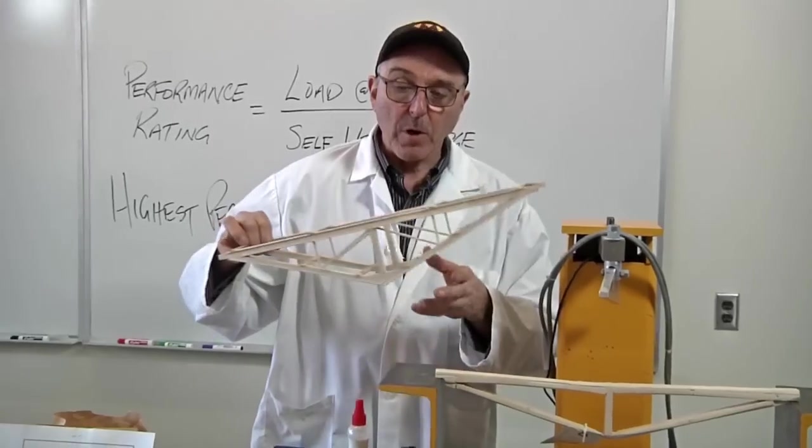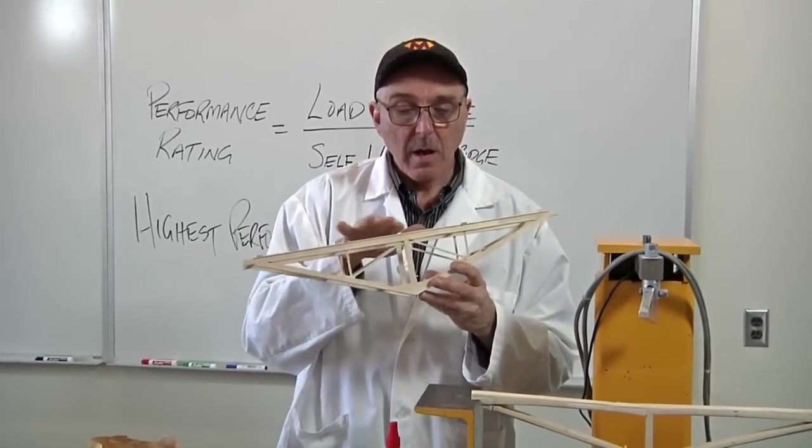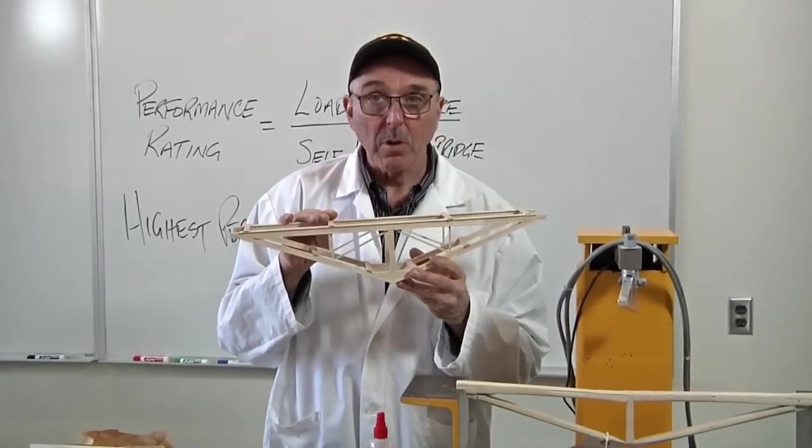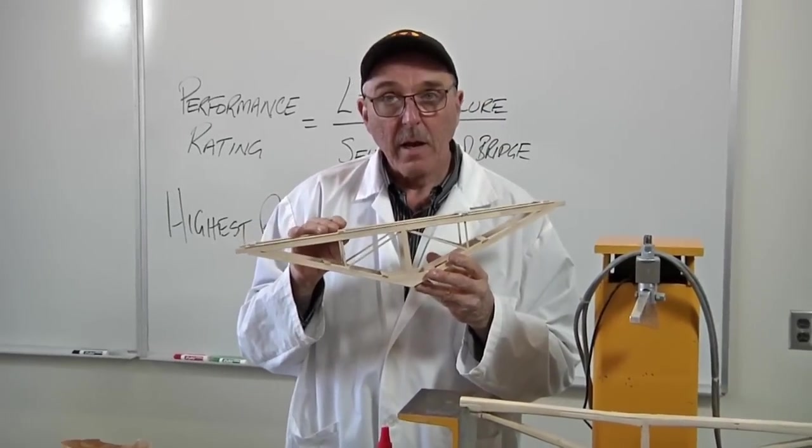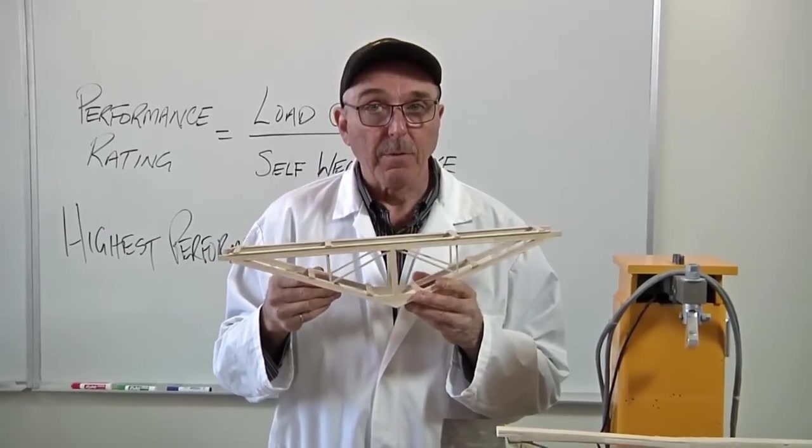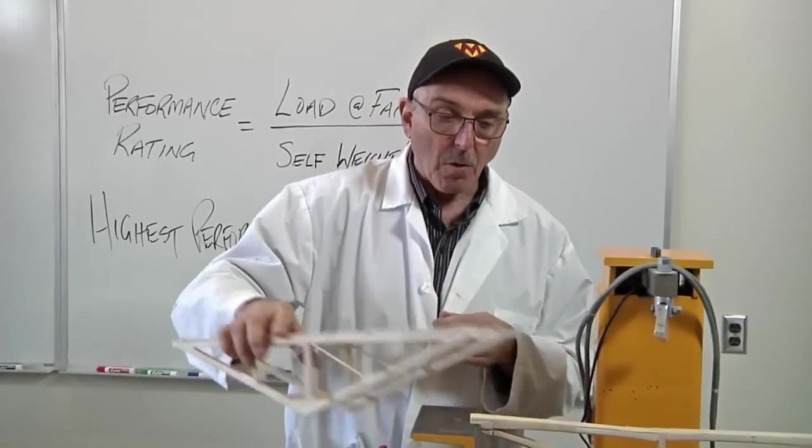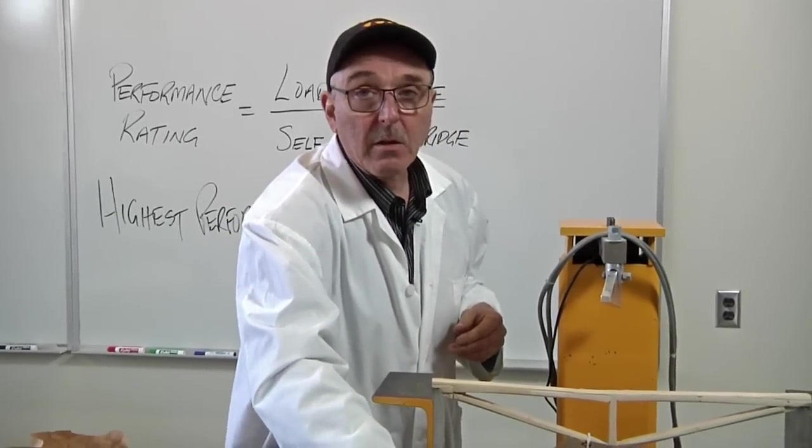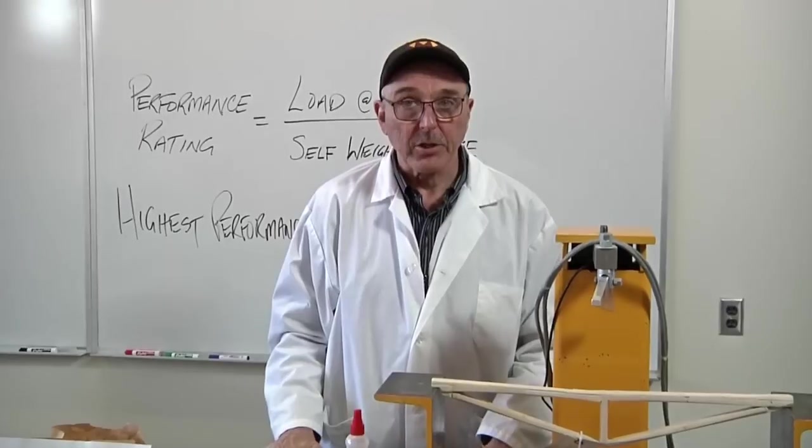So it's not about building the strongest bridge. It's all about building the strongest but lightest bridge. You have to look at what you're constructing and determine if every little piece of it is going to help you carry more load. Because if it's not, you must get rid of it. Otherwise, all it's going to do is bring your performance rating down. So, once again, performance rating: load at failure divided by self-weight of the bridge.